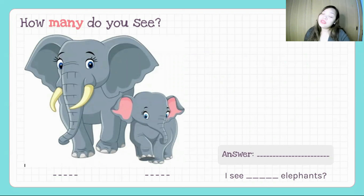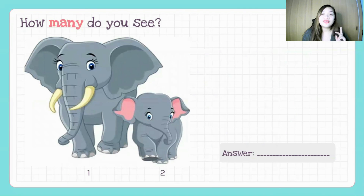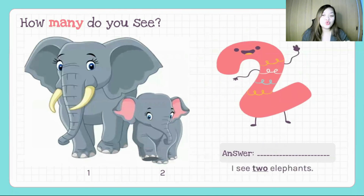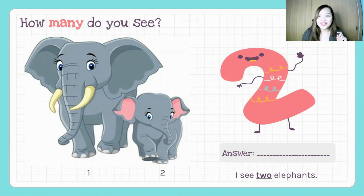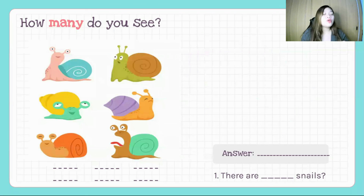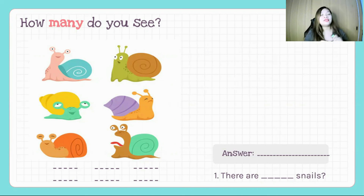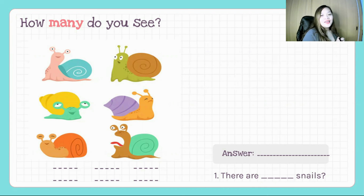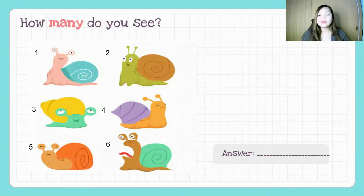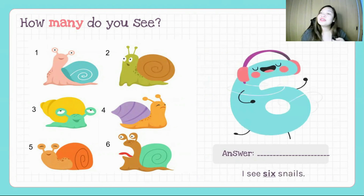How many do you see? Try to count. Answer revealed — the answer is two. I see two elephants. Very good. One more — how many do you see? Last one for the 'How Many Do You See?' activity. I'm going to give you time to count. These are cute snails, isn't it? Let's reveal the answer. The answer is six. I see six snails.